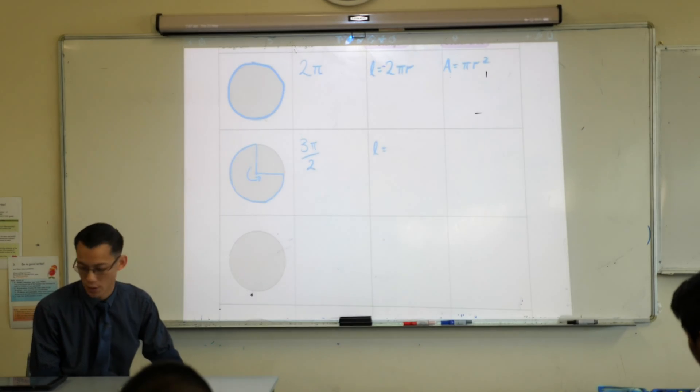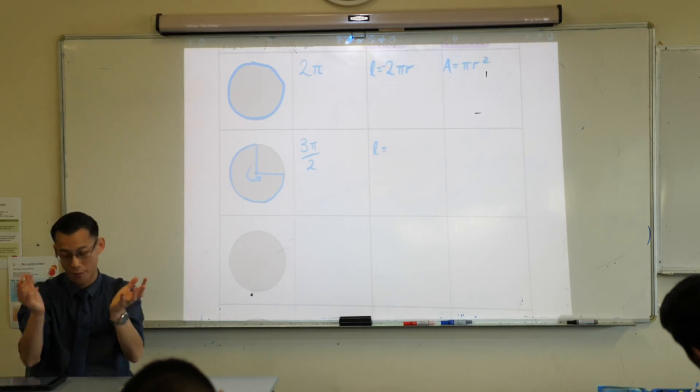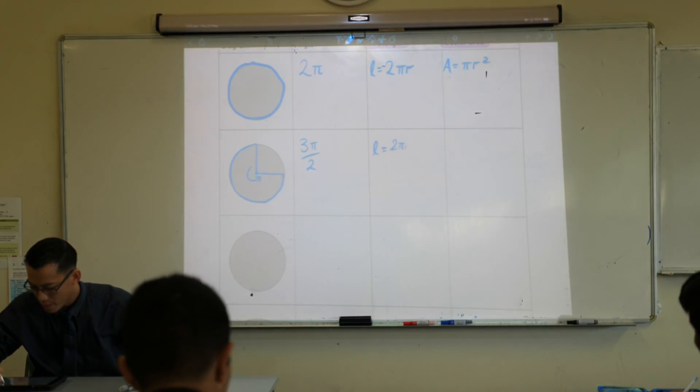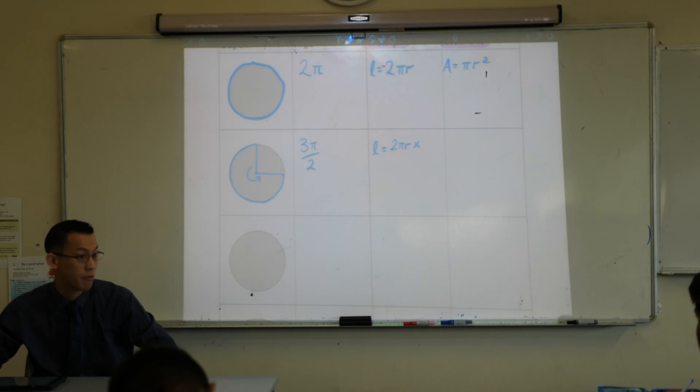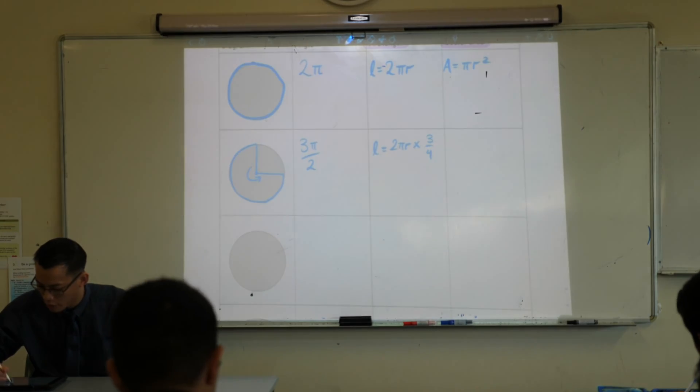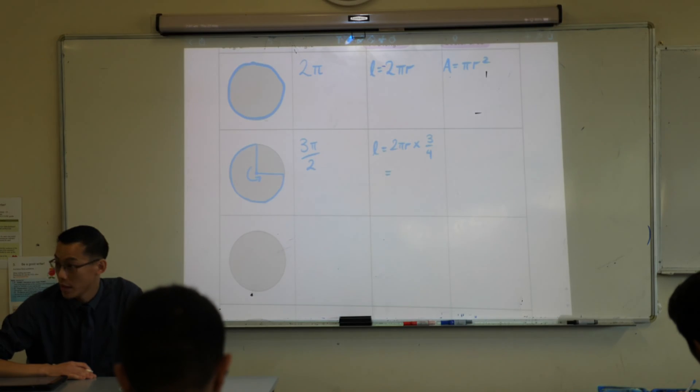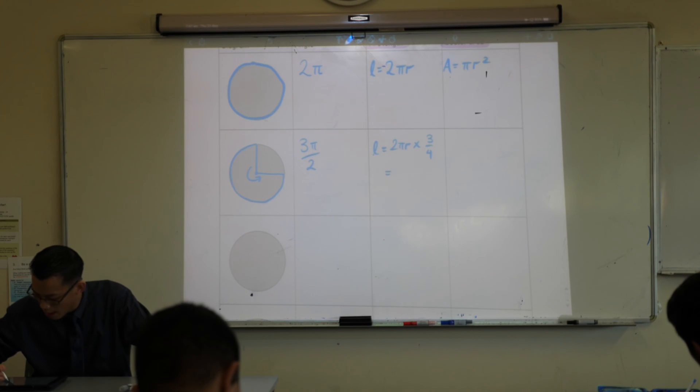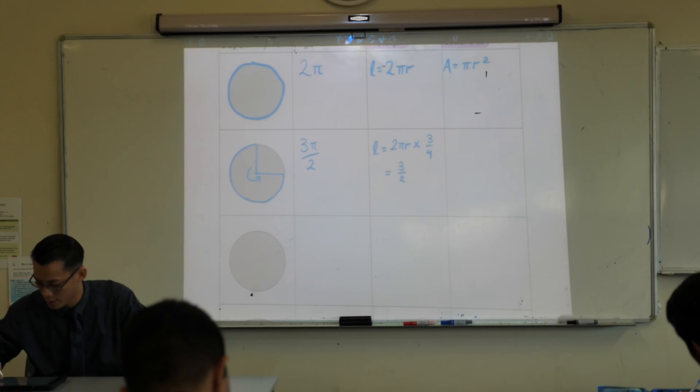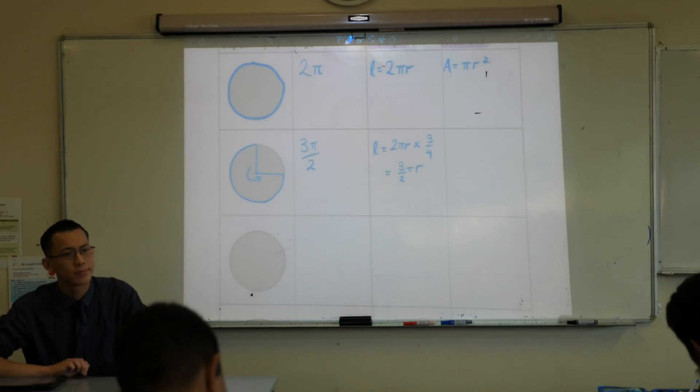How much of the circumference am I getting? Three quarters. Three quarters, right? Three fourths. So that whole circumference, 2πr, I would multiply that by three quarters, by three fourths. Three over four. Can you guys simplify that for me? Four goes into πr times three over two. Yep, πr times three over two. I might put that three over two out the front, and then there's the π, then there's the r. Interesting.